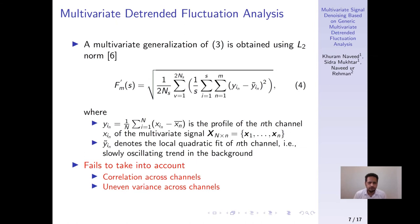A multivariate generalization of DFA has also been developed in reference 6, where a straightforward generalization of the root mean square function was obtained based on L2 norm. However, this generalization fails to take into account the correlation across channels.